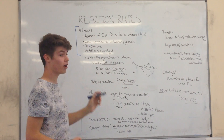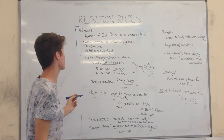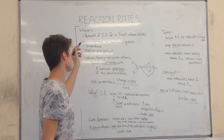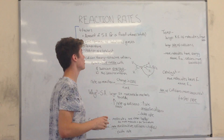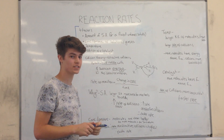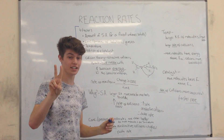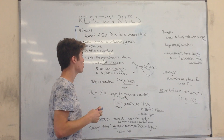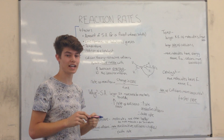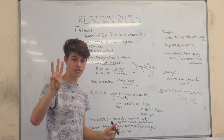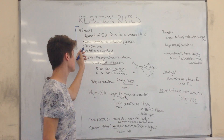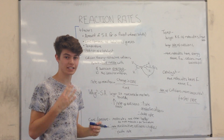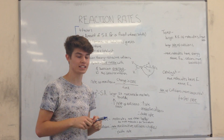Reaction rates. There are four factors that affect the rate of reaction. The first factor is the amount of surface area for a fixed volume for solids. The second factor is the concentration or pressure for solutions or gases. The third factor is the temperature of the reactants. And the fourth factor is the addition of a catalyst.